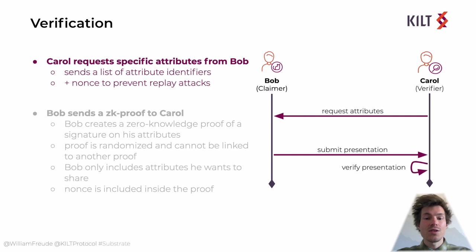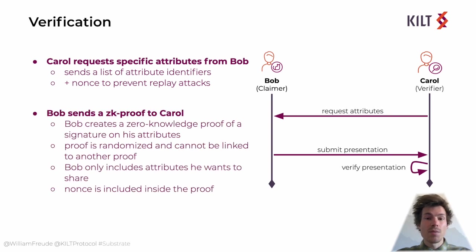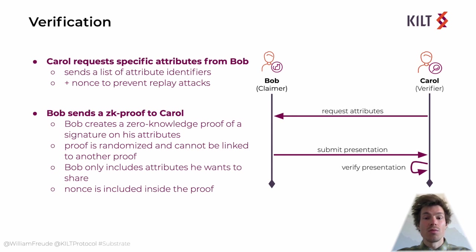As in the attestation, Carol starts the verification by sending a nonce and also a list of attributes she has to see in order to verify Bob's credential. Then Bob uses his credential, Alice's public key, and Carol's nonce to build a zero-knowledge proof on his attributes. And when verifying, Carol checks three things: first, does the attester's public key match the credential signature? Second, has the credential been revoked? And third, was Carol's nonce really used to create the proof? If everything checks out, the proof is verified.